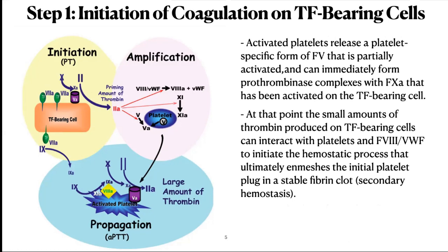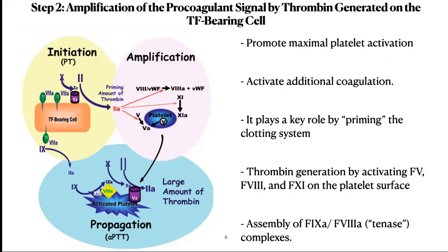Activated platelets release a platelet-specific form of factor V that is partially activated and can immediately form prothrombinase complexes with factor Xa that has been activated on the tissue factor-bearing cells. The small amount of thrombin produced on tissue factor-bearing cells can interact with platelets, factor VIII, and von Willebrand factor to initiate the hemostatic process that ultimately enmeshes the initial platelet plug in a stable fibrin clot — also known as secondary hemostasis. Amplification of prothrombinase signals by thrombin generated on the tissue factor-bearing cells plays a key role by priming the clotting system.